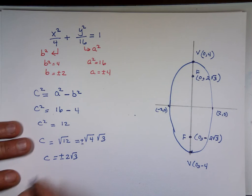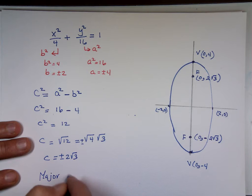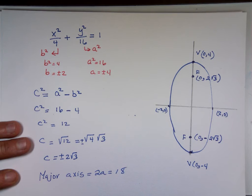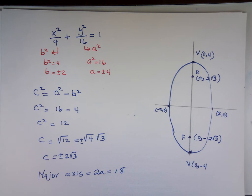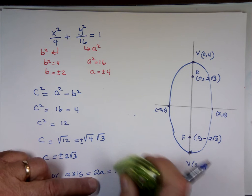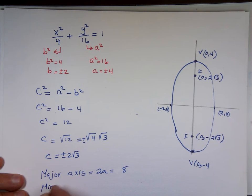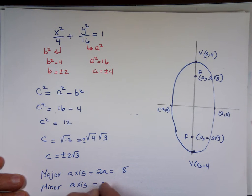What is the major axis? Twice A, which is 8. What's the minor axis? Twice B, which is 4.